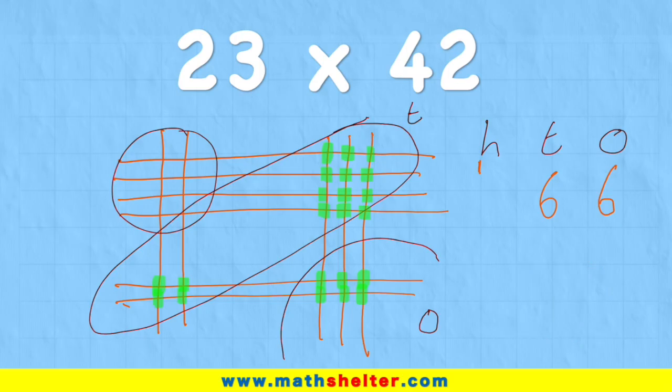Now let's see how many intersections I have in the 100s. I have 1, 2, 3, 4, 5, 6, 7, 8, plus the one that I had over here — 9. So my final answer is 9, 6, 6.